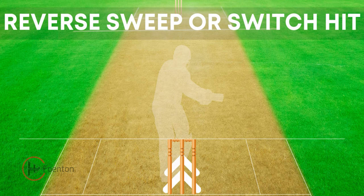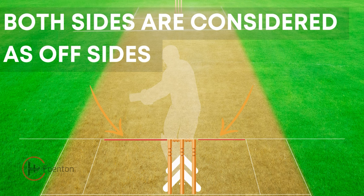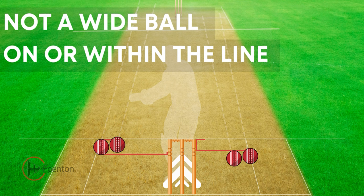Another situation may occur when the batsman attempts a reverse sweep or a switch hit. In this situation, both the off side and the leg side would be considered as off sides. If the ball stays within the reach of the batsman on either side of the stumps, it should not be called a wide ball.